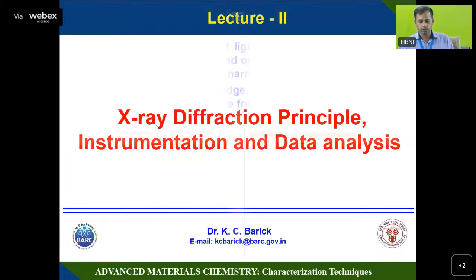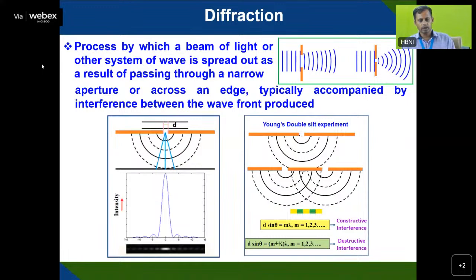First we will look at diffraction. Diffraction is a process by which a beam of light or other system of waves is spread out as a result of passing through a narrow aperture. You can see here, this is a narrow aperture — the orange one. Light passing through this aperture shows how the wave nature is generated due to diffraction. Wave patterns are generated, and typically it is accompanied by interference between wave fronts produced.